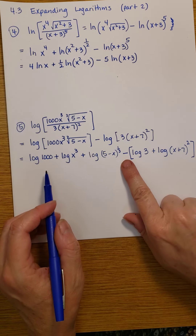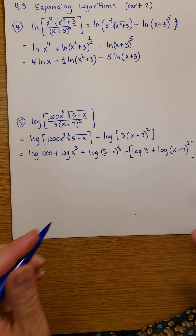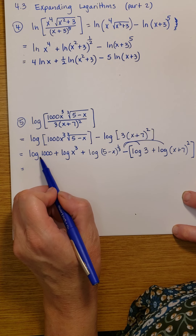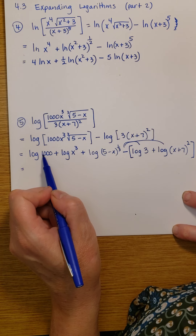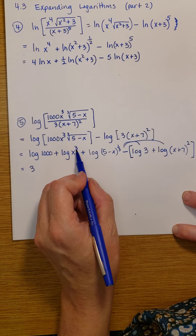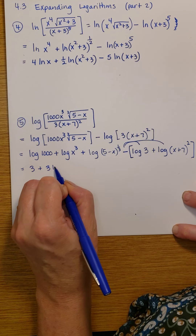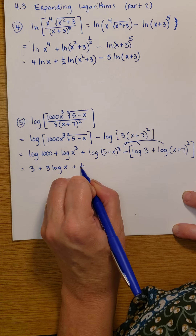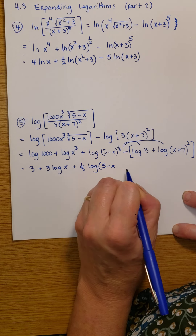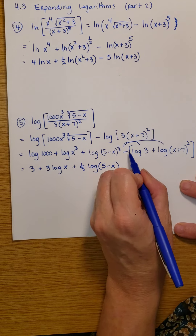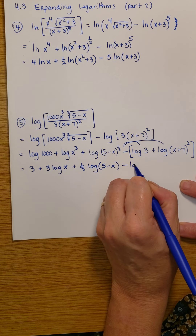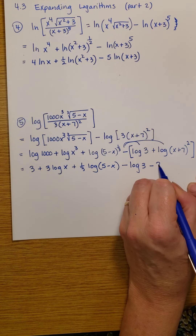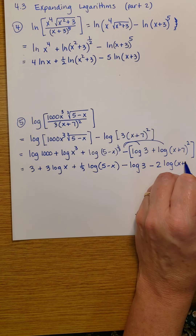Then I could go ahead and distribute the negative. Remember log of 1,000 — the base is 10, so log of 1,000 equals 3. I bring the 3 out front by the power rule and get 3 log x, plus — this power comes out front also — 1 third log of 5 minus x. Then distributing the negative: minus log 3, and the 2 comes out front with the negative sign giving minus 2 log of x plus 7.